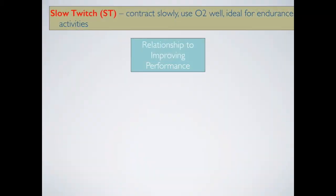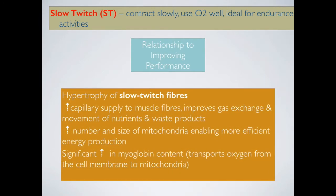In terms of training adaptations, slow-twitch fibres can experience hypertrophy. When we apply progressive overload and increase the intensity of aerobic training with each session, we will experience an increased capillary supply to muscle fibres, which improves gas exchange and movement of nutrients and waste products. The capillary beds increase in size and become more efficient in delivering oxygen. The number and size of mitochondria also increase, enabling more efficient energy production — the mitochondria is what produces the ATP. Additionally, there is a significant increase in myoglobin content, the protein in muscles that transports oxygen to the mitochondria, similar to what haemoglobin does in the blood.